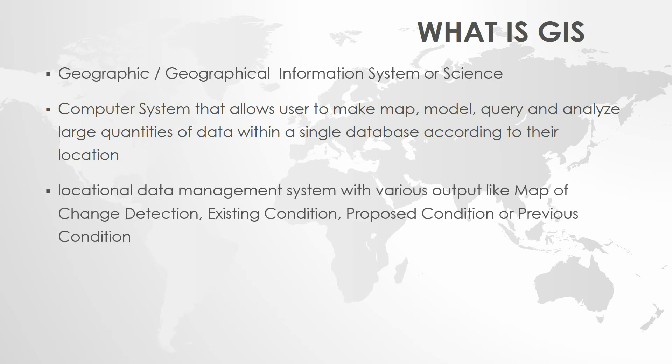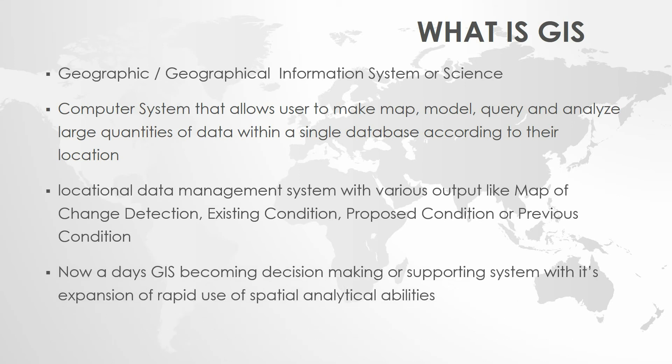GIS is a Locational Data Management System. These systems produce various outputs such as maps, showing existing conditions. It also enables change detection — that means comparing previous and present conditions through overlay analysis. That is why GIS is becoming a decision-making and supporting system, with its rapid expansion and spatial analytical ability.